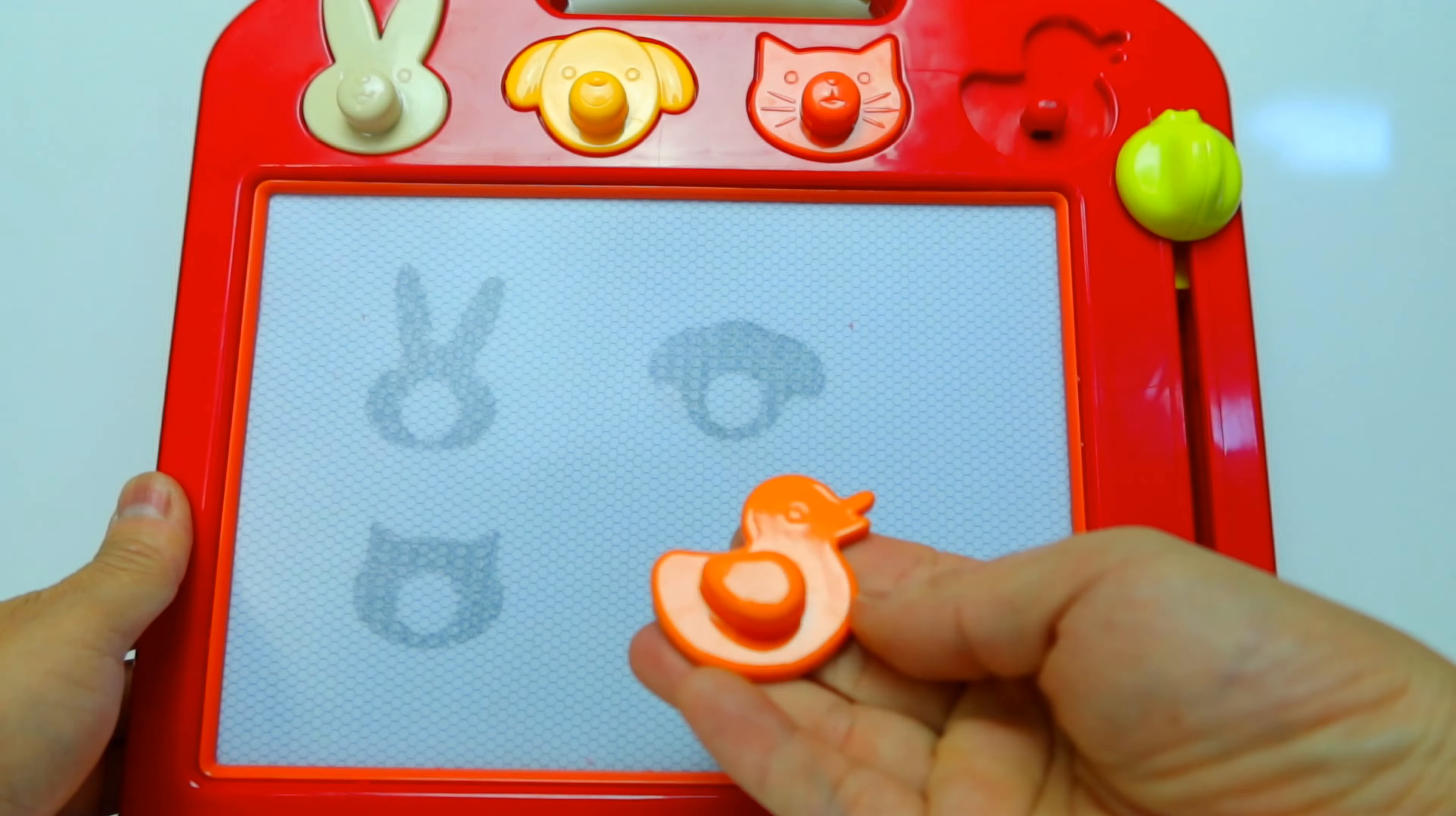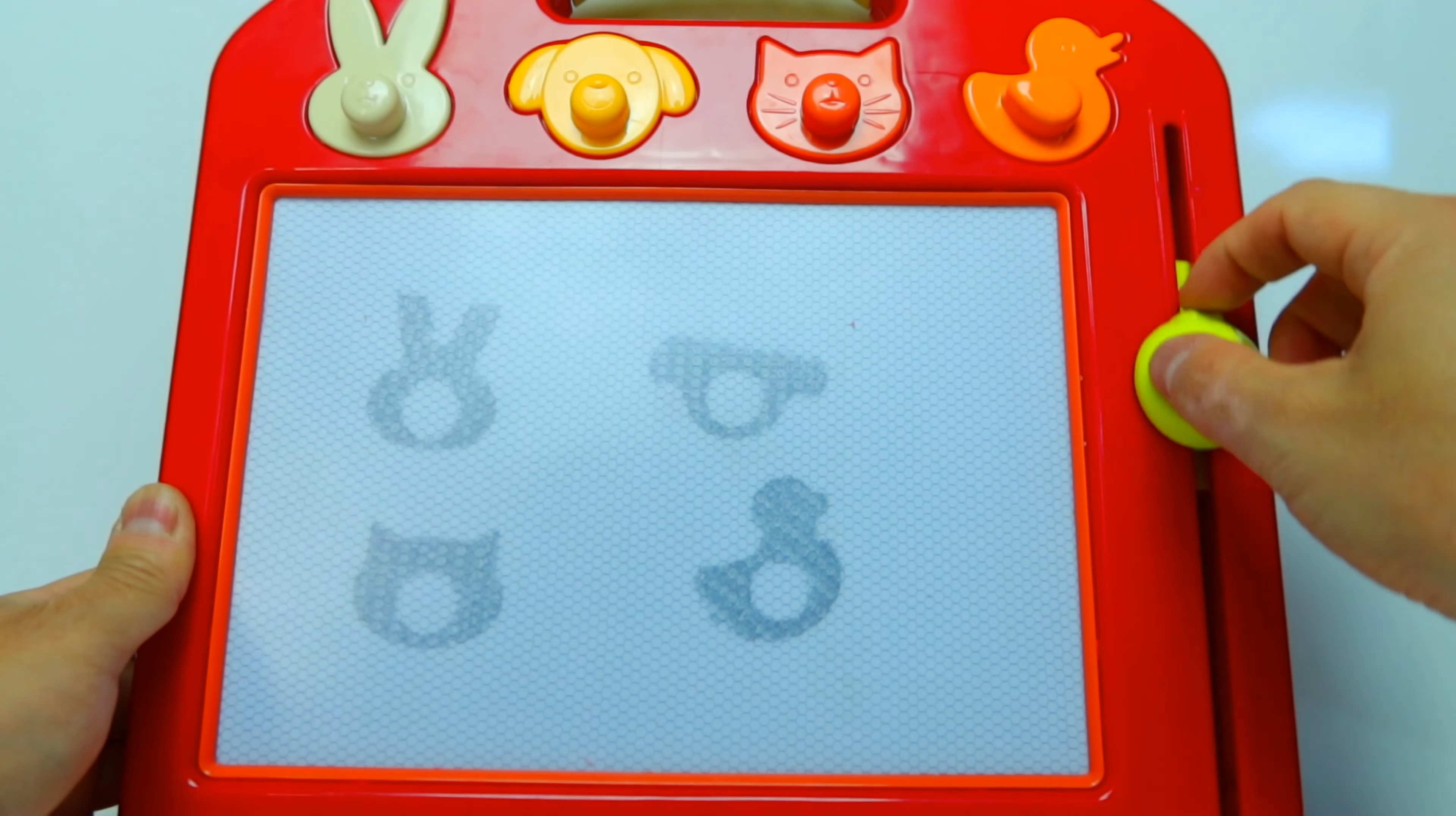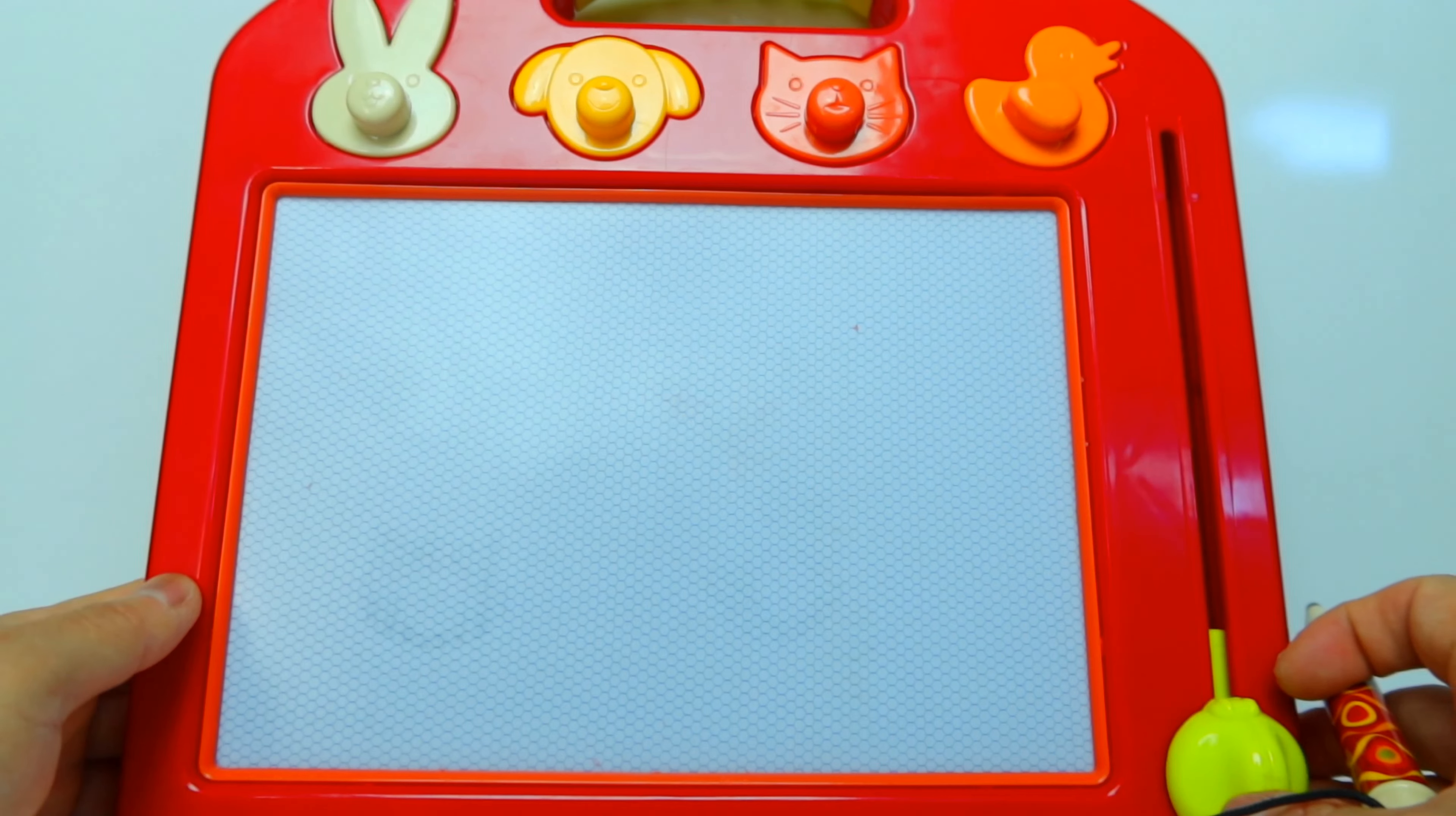Fourth one, we have a little ducky. Yes! Okay, clear the board. We're gonna start from single digit.